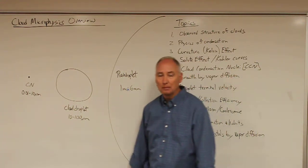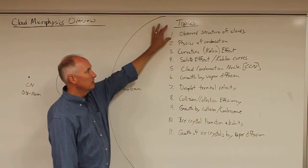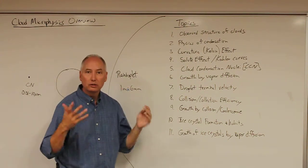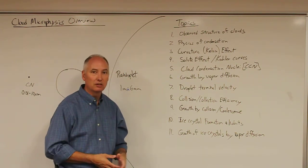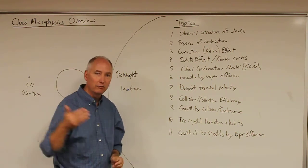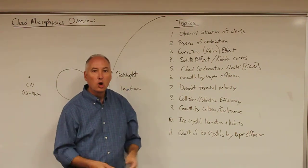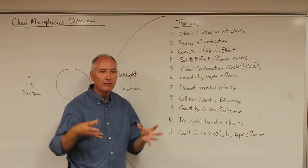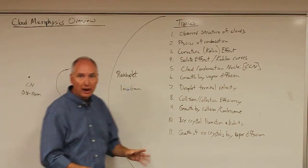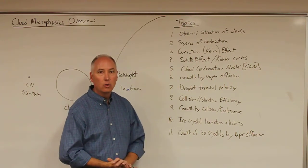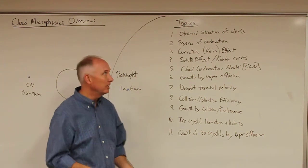So big picture: we're going to start off with the observed structure of clouds—what clouds actually look like from a scientific perspective from measurements taken from aircraft flying through clouds. Next, we'll talk about the physics of condensation: why does water vapor in the atmosphere ever want to condense onto a condensation nucleus? What is the physics of that condensation process and what makes it a spontaneous process?